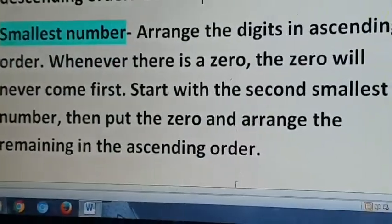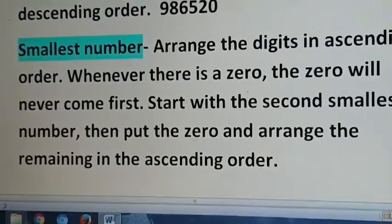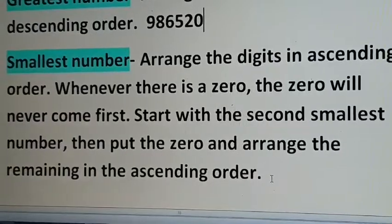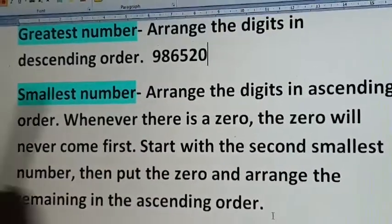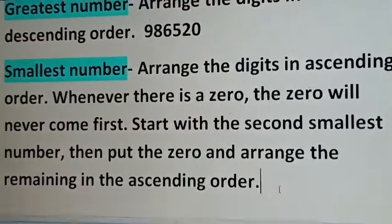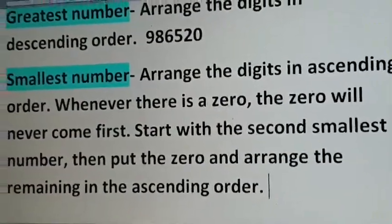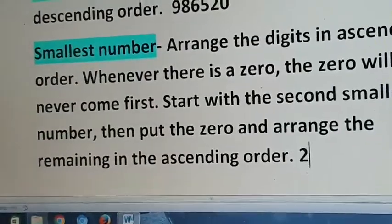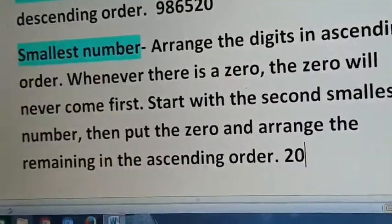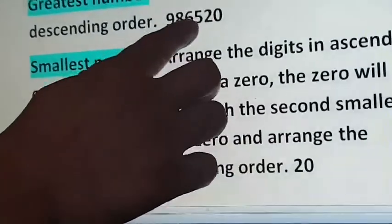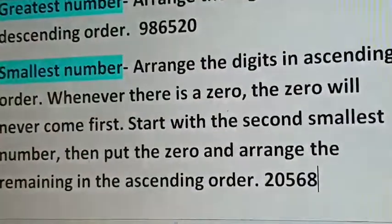To make the smallest number, arrange the digits in ascending order — from smallest to largest. But here we have 0, and we cannot put 0 in the first place or it will not be a 6-digit number. So take the second smallest digit first — that is 2. Then 0 comes in the second place, and the remaining digits follow in ascending order: 5, 6, 8, and then 9.